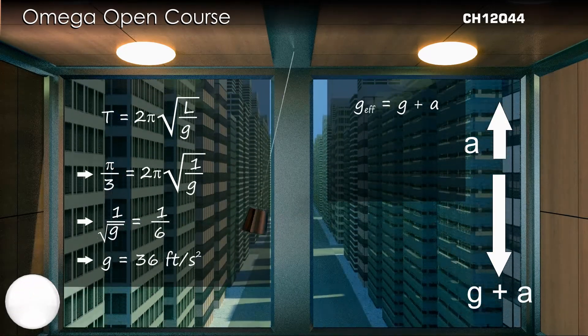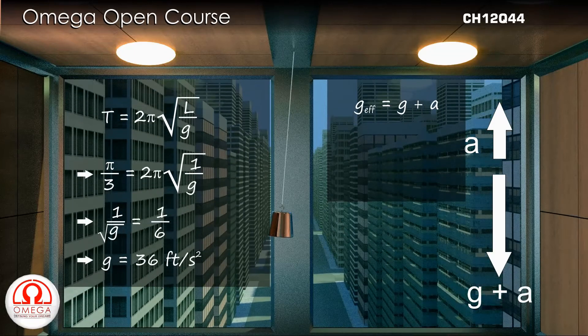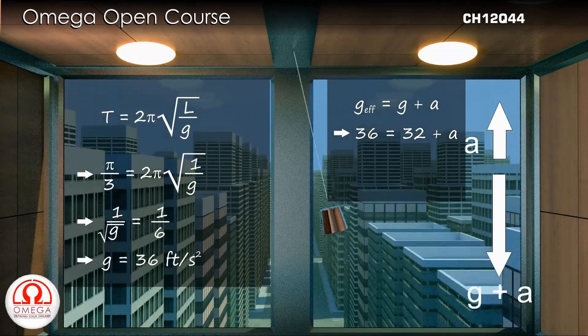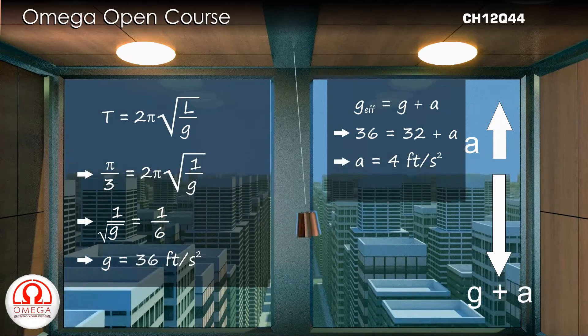The value of g is 32 feet per second squared. Putting the value, we get 36 equals 32 plus a, or a equals 4 feet per second squared.